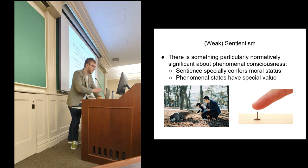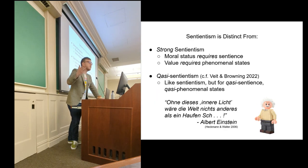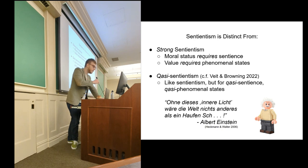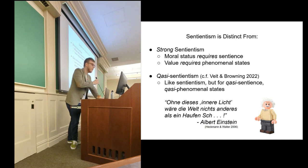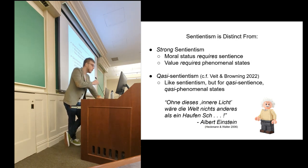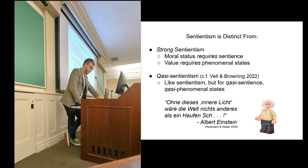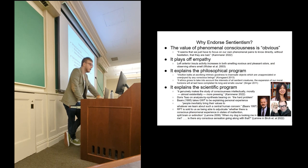So we can distinguish sentientism from a couple similar views. One would be strong sentientism, which would be about phenomenal consciousness being a requisite for value or moral status. I'm not going quite that far, at least today, though you can see Albert Einstein—I won't butcher the German—but he said if it wasn't for this inner light, the world would be nothing but a heap and scheisse. That's the quintessential expression of strong sentientism. Another is quasi-sentientism, which we see coming out of the illusionist school of thought. It's like sentientism, but for quasi-phenomenal states—just the disposition to report that one is in such a state, but it doesn't necessarily involve phenomenality itself.